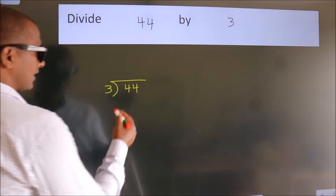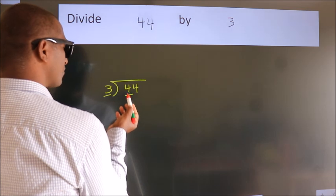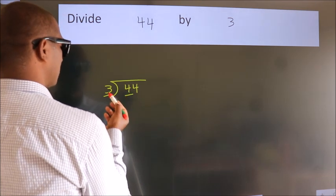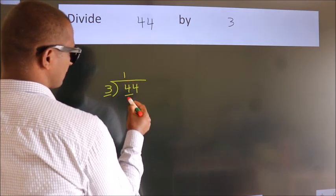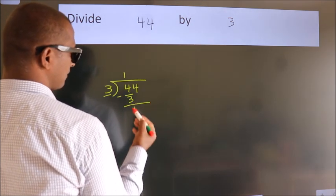Next. Here we have 4, here 3. A number close to 4 in the 3 table is 3 times 1 is 3. Now, we should subtract. We get 1.